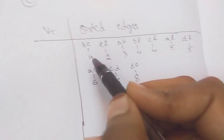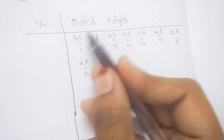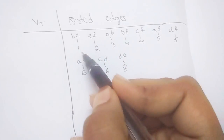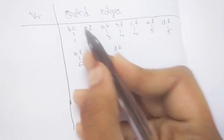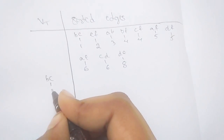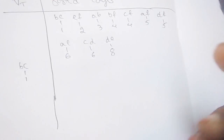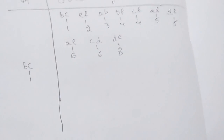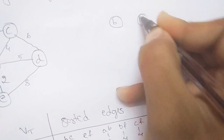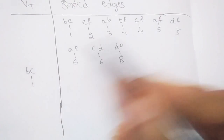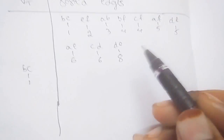In the next step, take out the edge with the minimum weight from the vertices column — that is BC with weight 1. Check that it does not form a cycle. Since it doesn't, start constructing the minimum spanning tree with BC, weight 1. Then check EF: attaching EF does not form a cycle, so we include it.